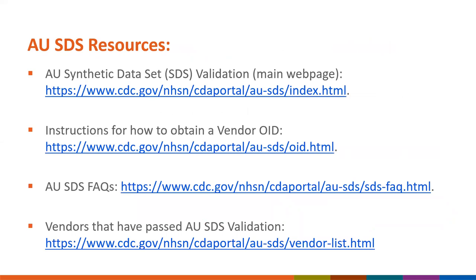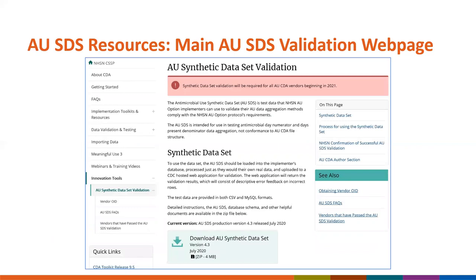Here you can see the available resources and links to the website. The first one listed is our main web page, which has links to other resources—I encourage you to start there if you're new to AU SDS validation. Our main AU SDS validation webpage has a downloadable AU synthetic dataset with instructions in the zip file. We just updated the dataset in July with release 4.3. Vendors that passed validation prior to July 2020 do not need to revalidate; vendors that have not passed AU SDS yet need to use the 4.3 release.